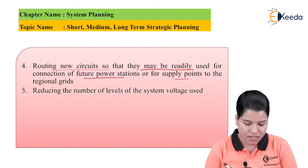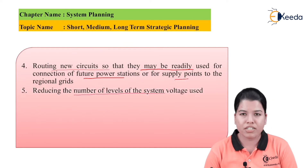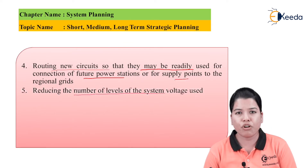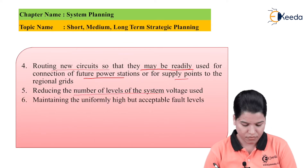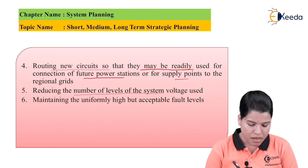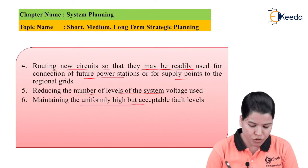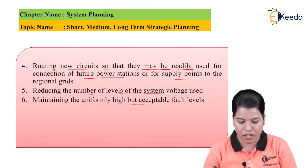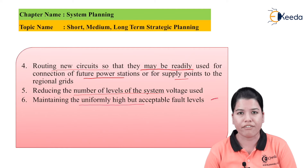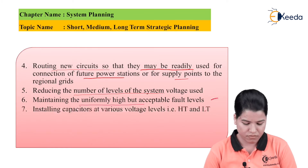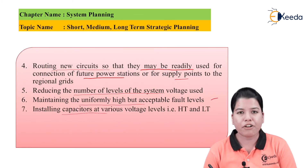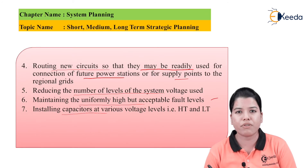Next aim is reduction in the number of levels of the system voltage that is used. Next aim is maintaining uniformly high but acceptable fault levels.